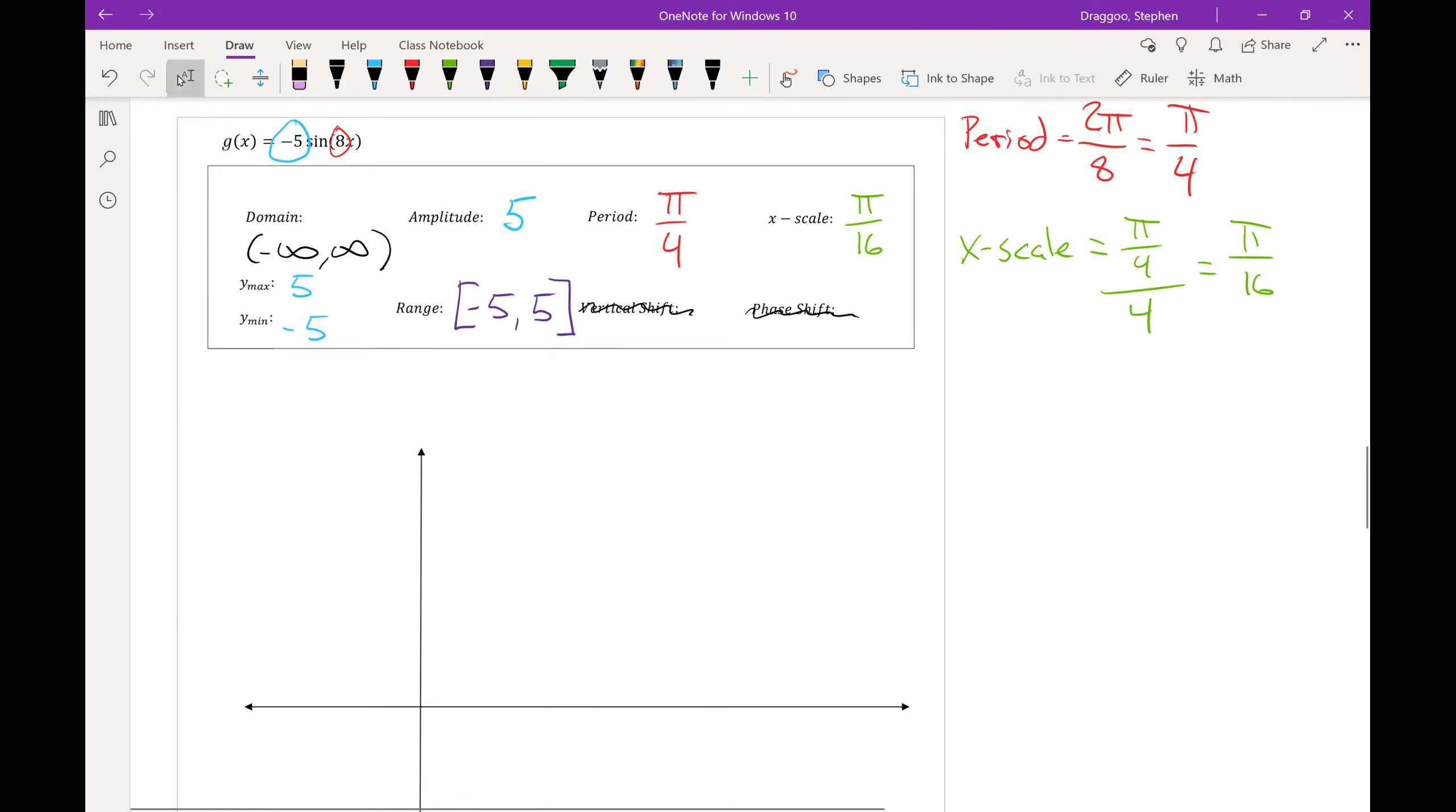So once again, count out four tick marks along the x axis. And that scale should count by π over 16. So one π over 16, two π over 16, three π over 16, four π over 16.